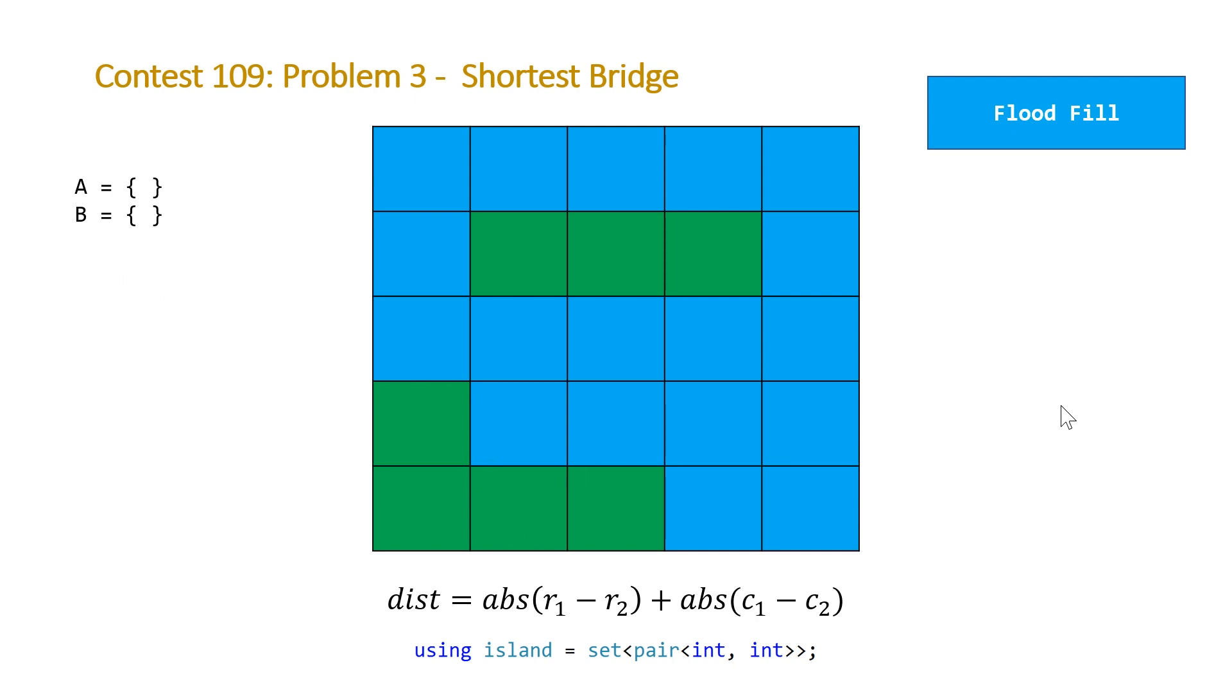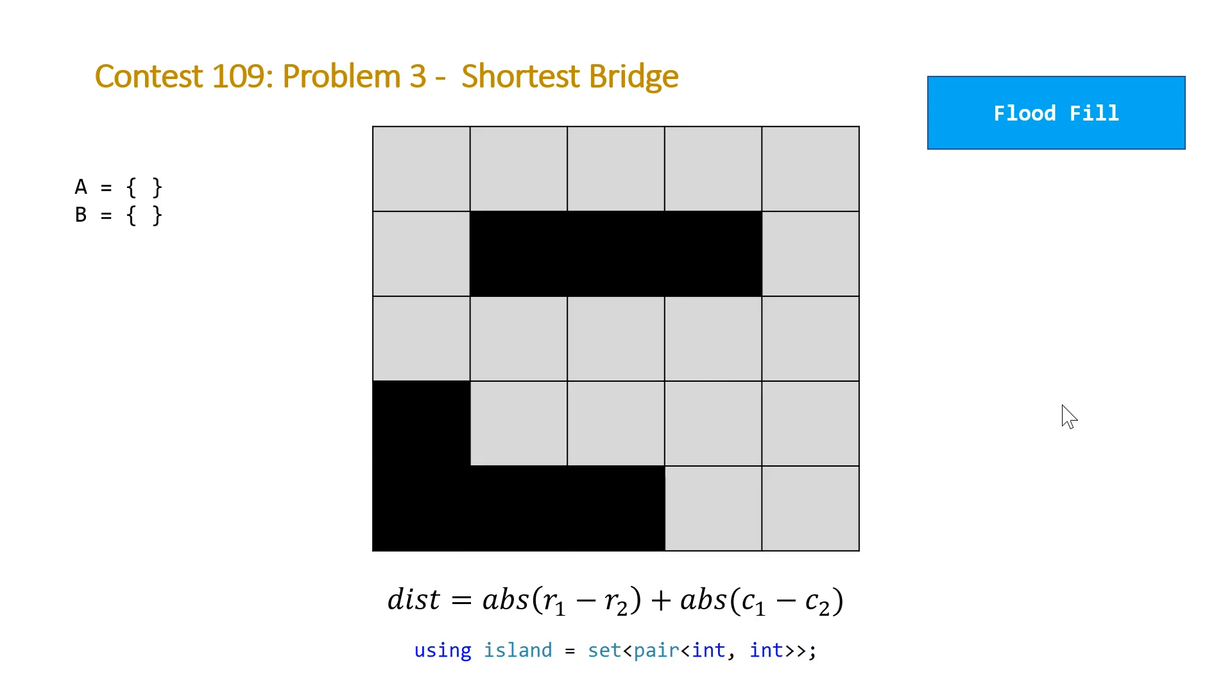What this will look like is we're going to turn this to a gray and black scale so we can tell what has been explored and what hasn't. We're going to start in our top left hand corner. Red will represent the current element that we're looking at. We're just checking at this point, does the value of our element equal one? We're just going to loop through nested for loop all the elements until we find one of these.